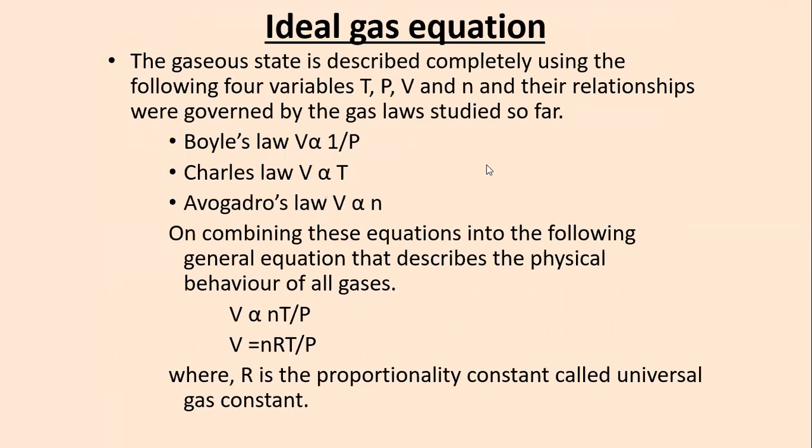Now comes the ideal gas equation. The state of any gas can be described completely by the following four variables: temperature, pressure, volume, and n (number of moles). So temperature is T, pressure is P, volume is V, and the number of moles is n.